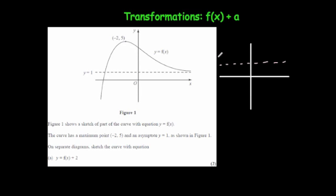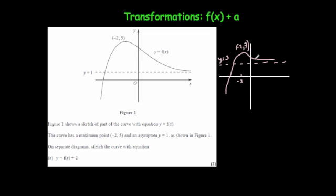The asymptote will be at y = 3. The curve will look exactly the same except higher by two squares — translated two squares upwards. It reaches the maximum point and then comes down. The point was (−2, 5); translated two squares upwards it becomes (−2, 7). So the asymptote moves two squares up, the maximum point moves two squares up, and the shape of the graph remains exactly the same.